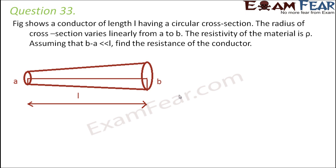The figure shows a conductor of length L having a circular cross section. The radius of cross section varies linearly from A to B, where B is greater than A, so the cross sectional area is increasing gradually. The resistivity of the material is rho. Assume that B minus A is less than L. Find the resistance of the conductor.